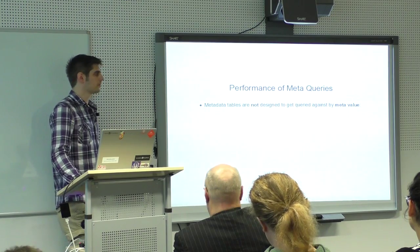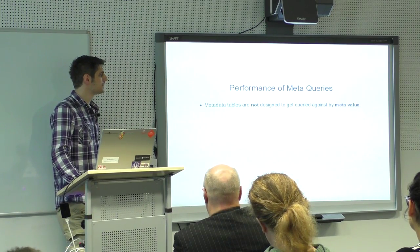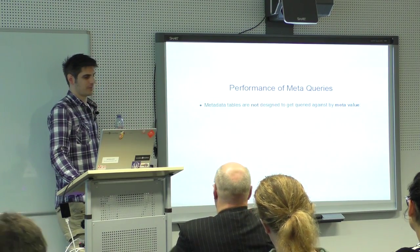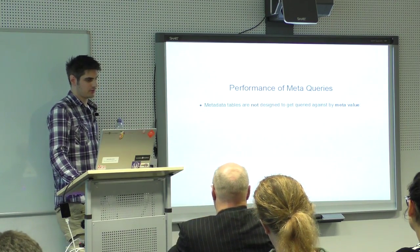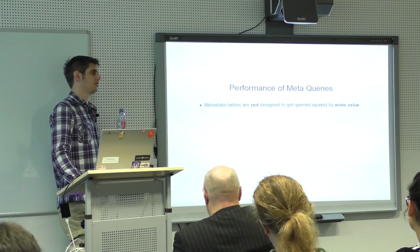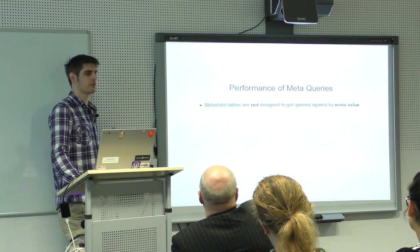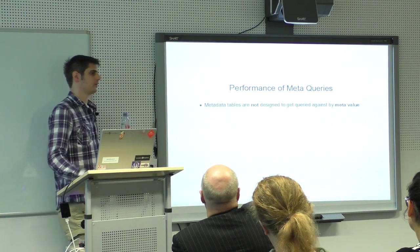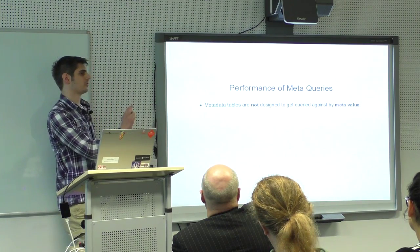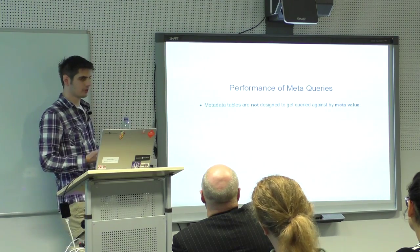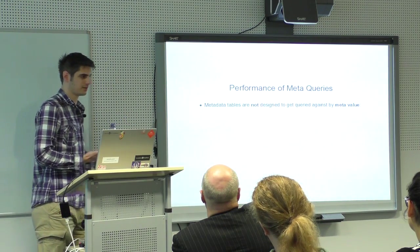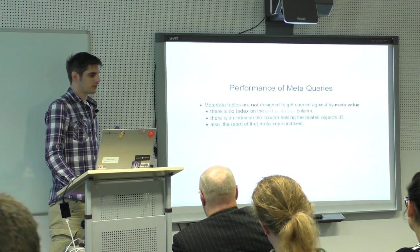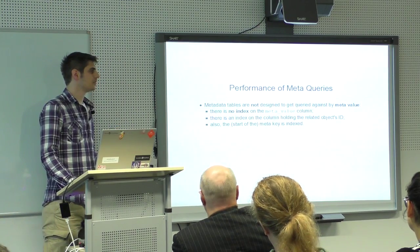None of these metadata tables are designed to be queried against meta value. You can do it, but you should not — for example, asking from 10,000 users all those with an email matching some regex. WordPress is able to do that, but it's slow. Why? The meta value field is not indexed.